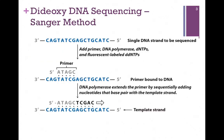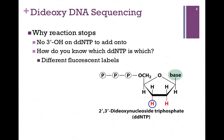So let's see how that reaction works. We start with the single-strand DNA to be sequenced and include in the reaction all of the components. The primer will anneal to the template strand, and DNA polymerase will extend that primer by adding nucleotides that base pair with the template strand. At some point, synthesis will stop — because we've incorporated one of these dideoxynucleotides.